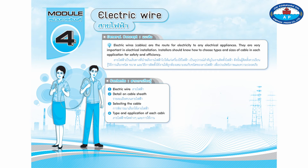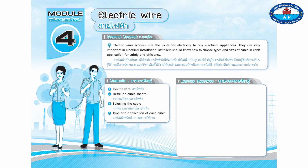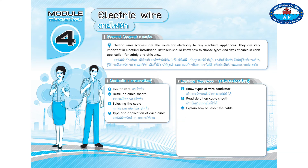Learning objectives: number one, know types of wire conductor; number two, read detail on cable sheath; number three, explain how to select the cable; number four, explain the application for each cable and how to use them.